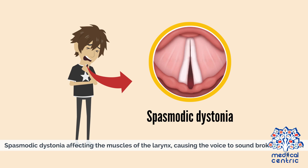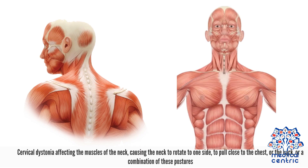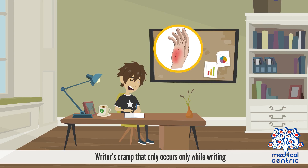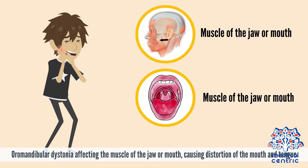Spasmodic dystonia affects the muscles of the larynx, causing the voice to sound broken or harsh. Cervical dystonia affects the muscles of the neck, causing the neck to rotate to one side, to pull close to the chest or the back, or a combination of these postures. Writer's cramp only occurs when writing. Oromandibular dystonia affects the muscles of the jaw or mouth, causing distortion of the mouth and tongue.